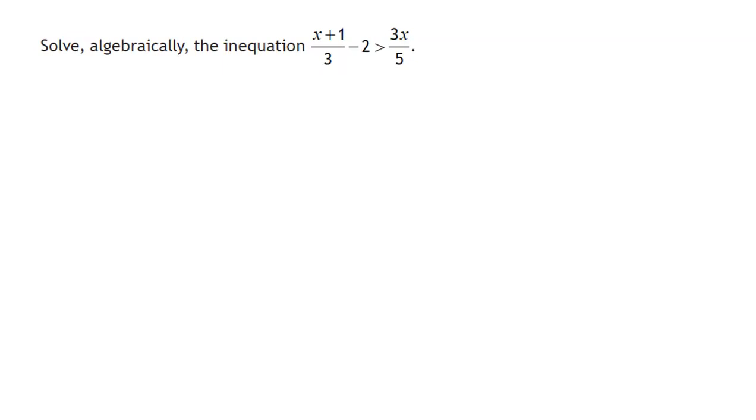Now, the first thing we need to do is, if we get something like this, is think about getting rid of the fractions. If we can get rid of the fractions, then it makes it a whole lot easier. Now, a way to do this is look at the denominators of the fraction and think of the lowest common multiple of both of those denominators. So I've got a 3 and I've got a 5. My lowest common multiple is 15.